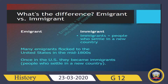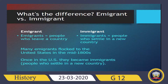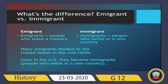Before going on, we should know the difference between the terms emigrant and immigrant. Emigrants are people who leave a country — for example, imagine you are living in Turkey and you want to change your location and live in another place, so you become an emigrant. Immigrants, on the other hand, are people who settle in a new country. So when you move from Turkey to live in a European country, you become an immigrant. Many immigrants flocked to the United States in the mid-1800s.